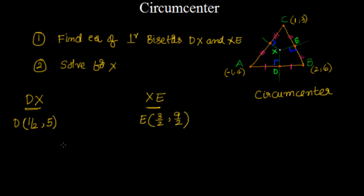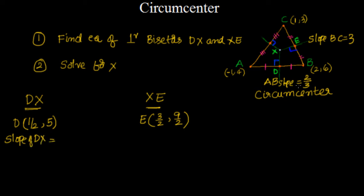Now let's find the slopes. Slope of AB = (6 − 4)/(2 − (−1)) = 2/3. Slope of BC = (6 − 3)/(2 − 1) = 3. Since DX is perpendicular to AB, slope of DX = −3/2 (negative reciprocal). Since XE is perpendicular to BC, slope of XE = −1/3.